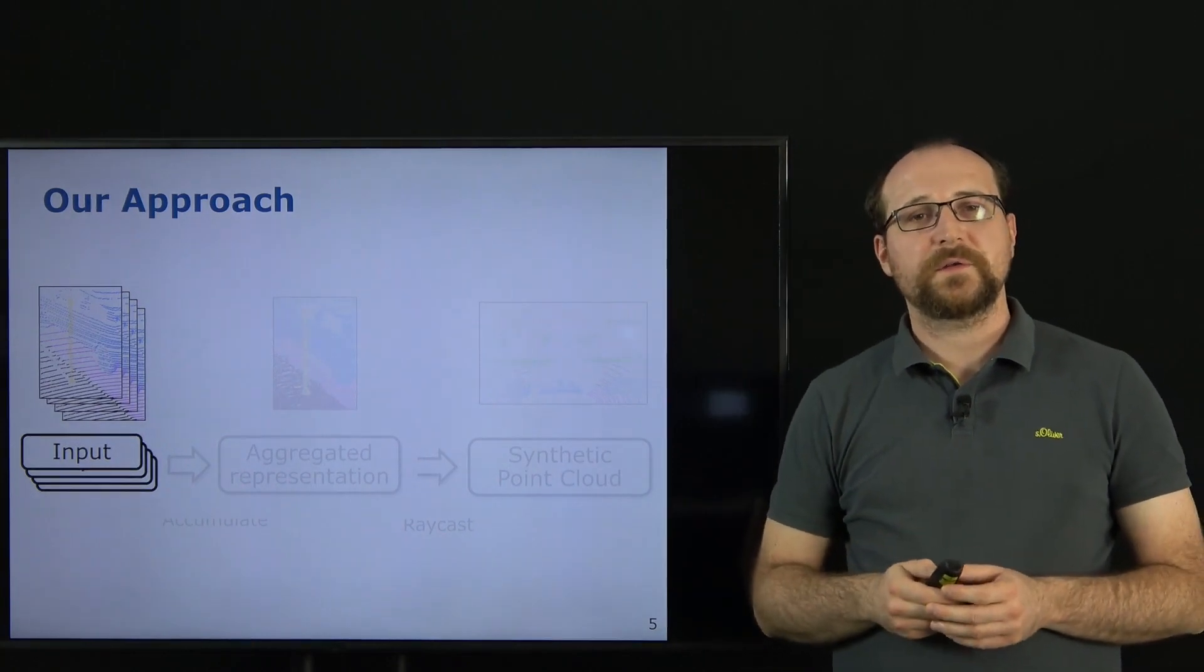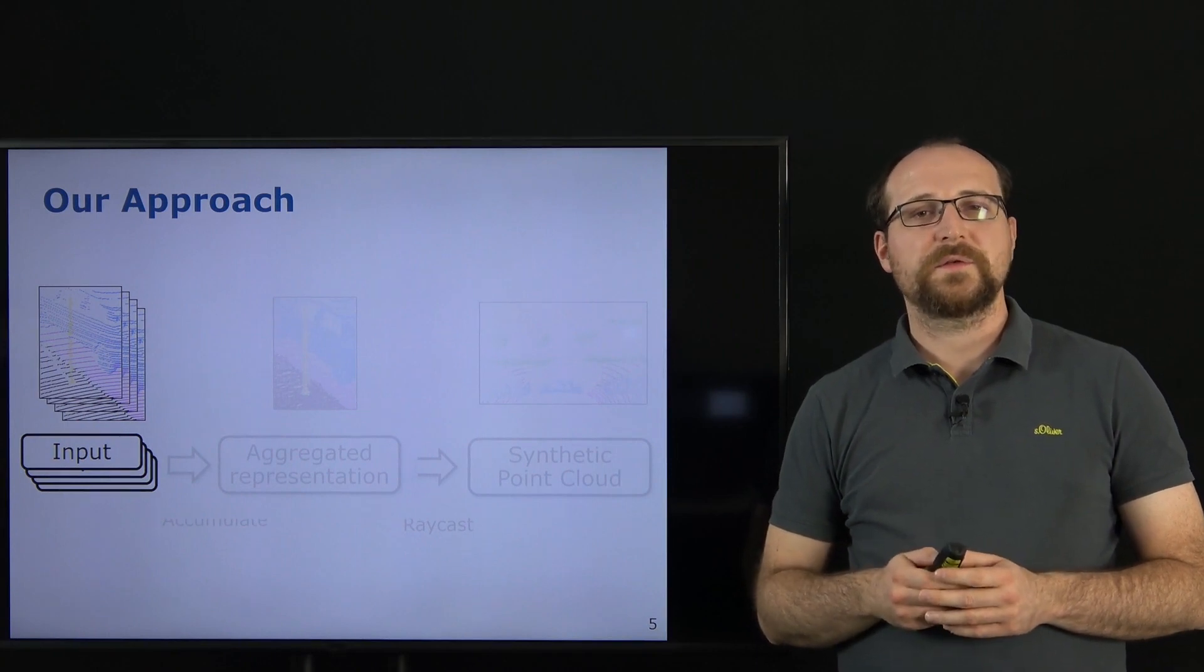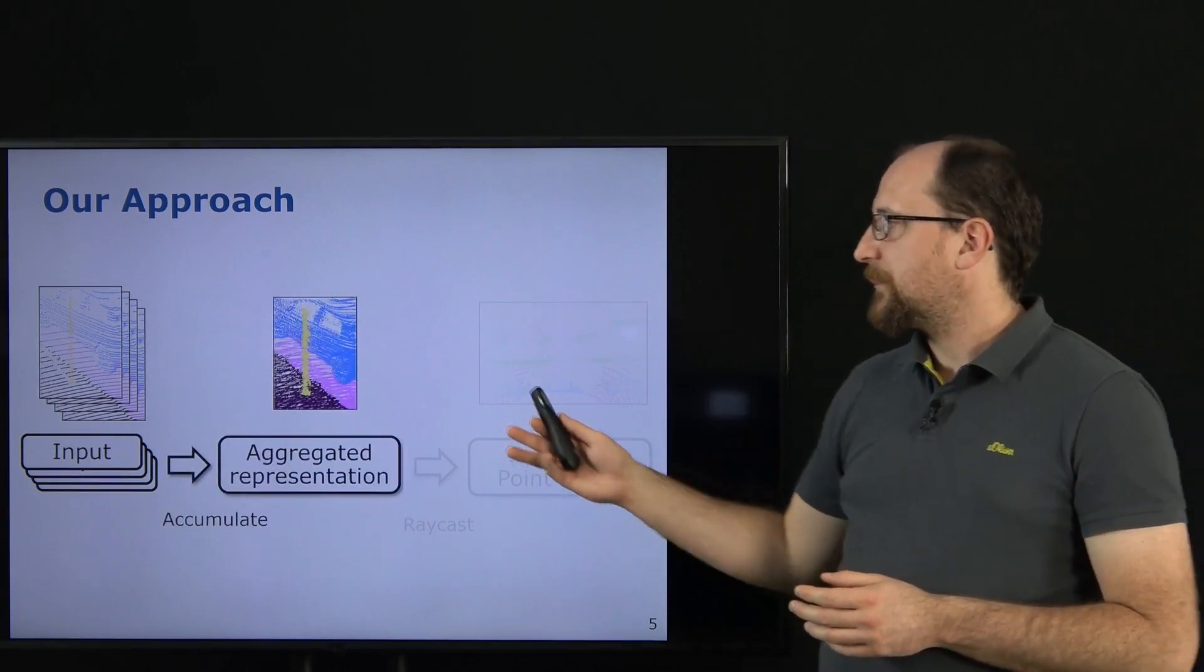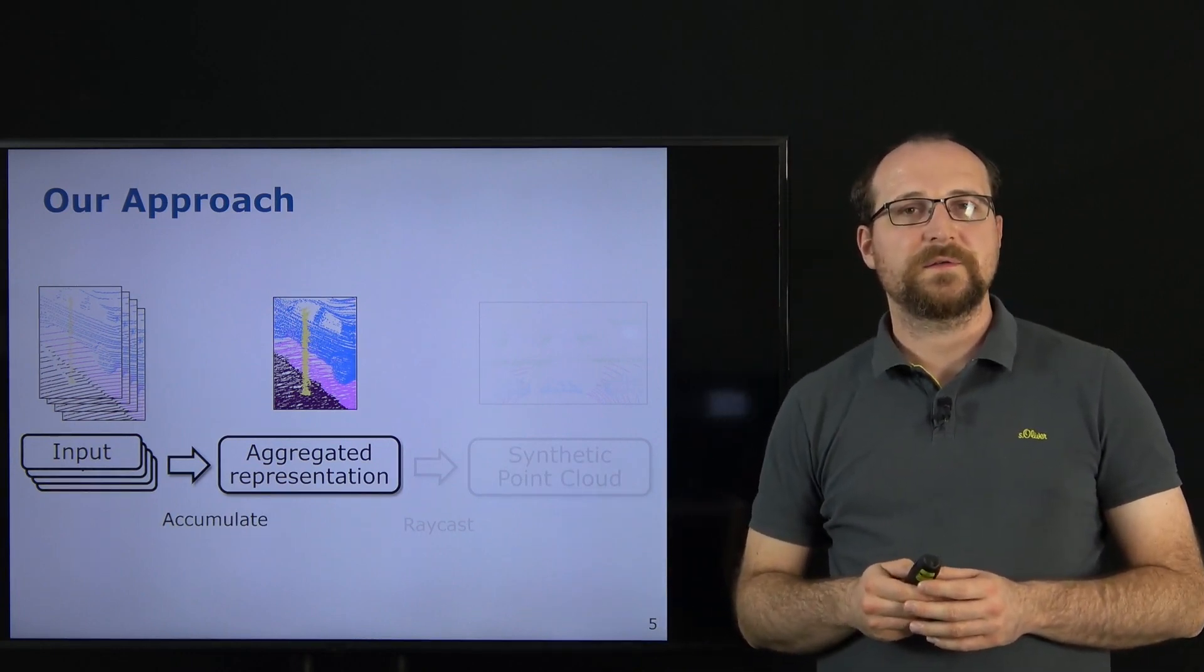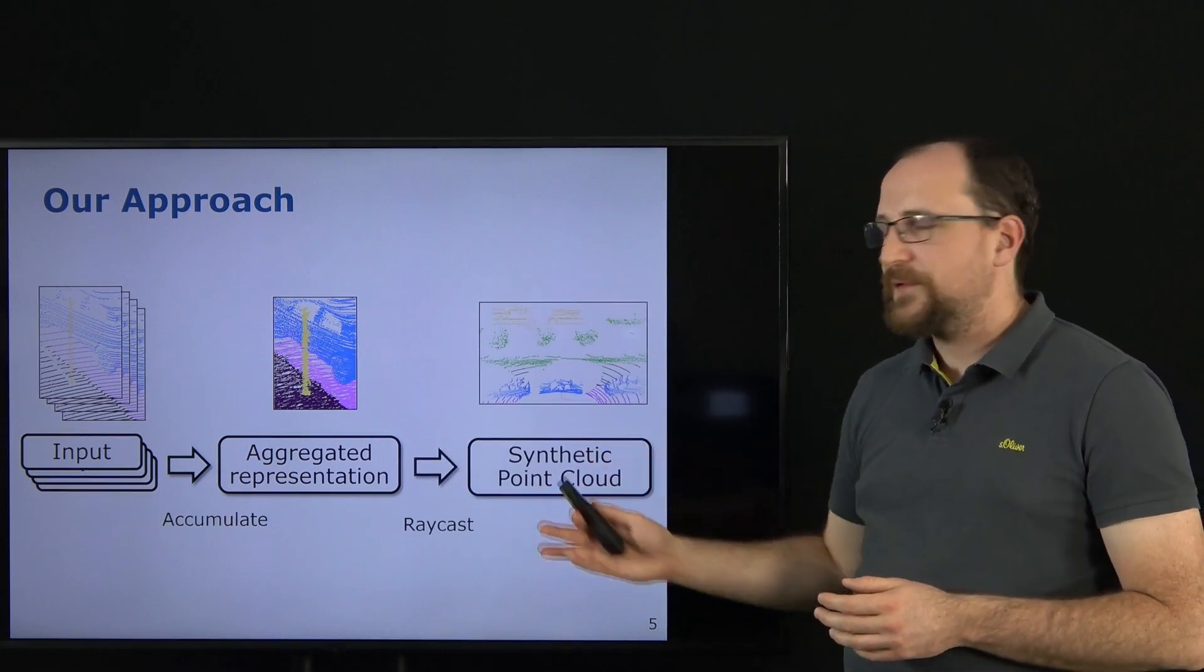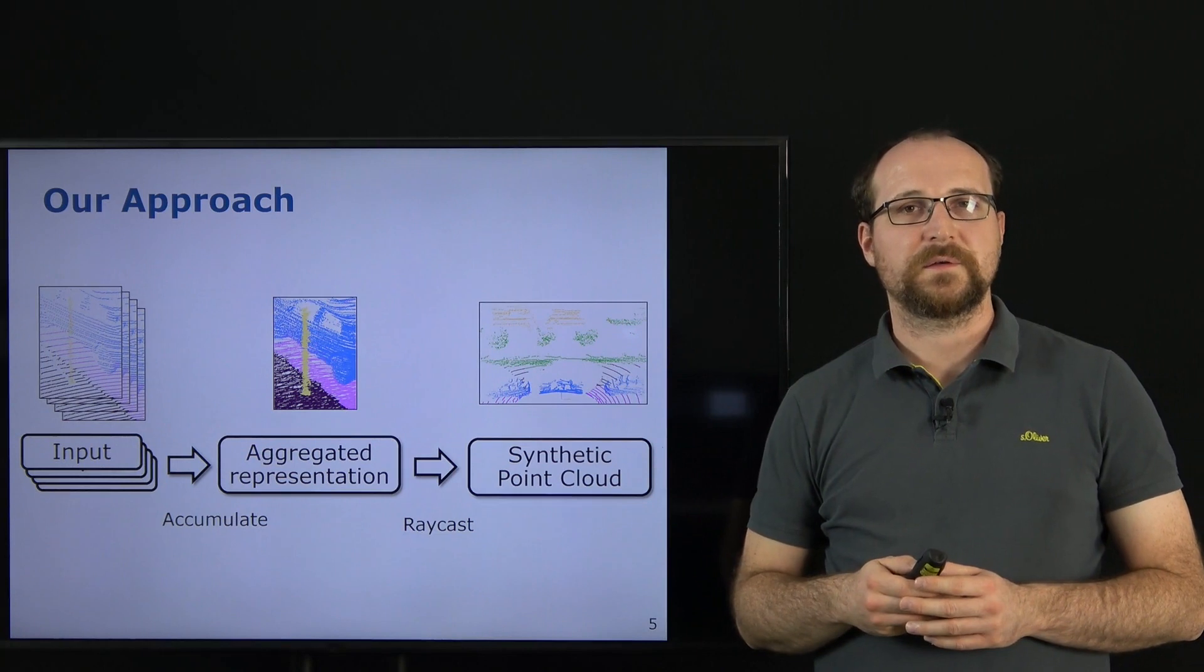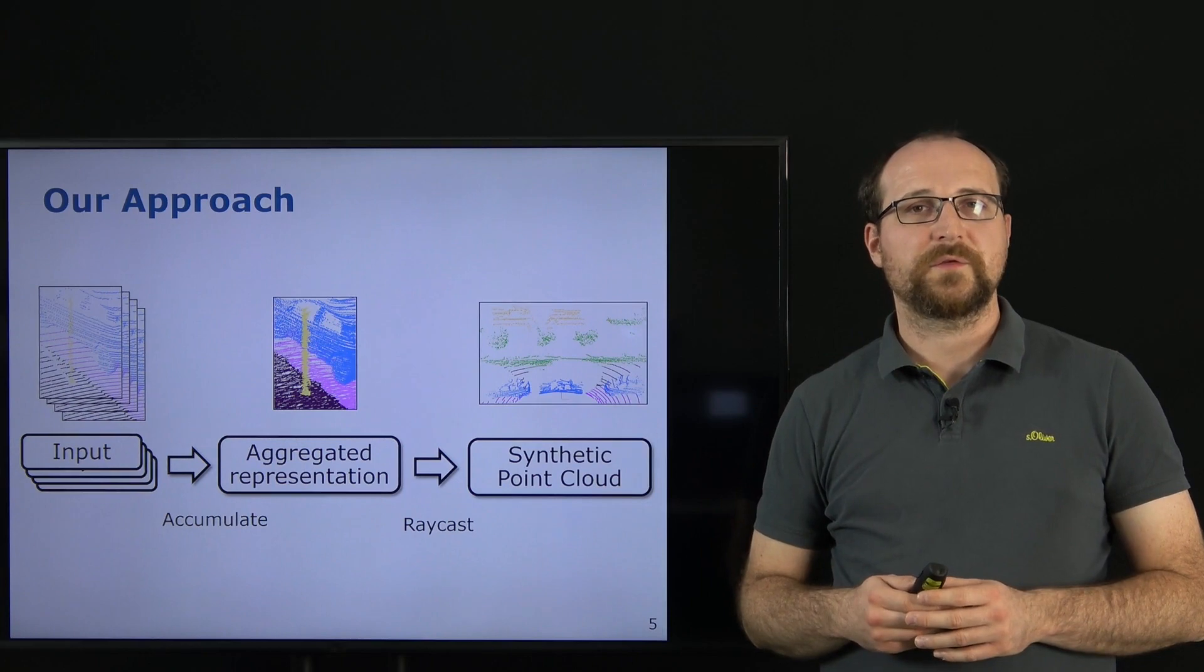Our goal is to generate point clouds that resemble the characteristics of a target sensor setup. To this end we use a sequence of consecutive labeled point clouds, which we then aggregate in an aggregated representation either by a dense point cloud representation or a mesh generated from a truncated sine distance function. Using this aggregated representation we then use ray casting together with the target sensor setup to generate synthetic point clouds that resemble the characteristics of the target dataset. Using this synthetic dataset we then can train a semantic segmentation approach for the target dataset.